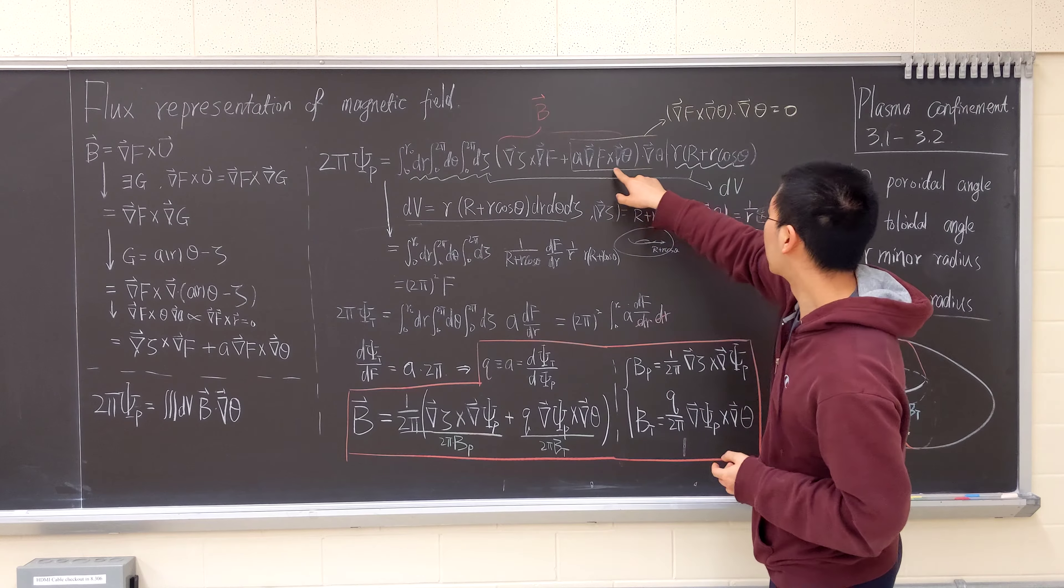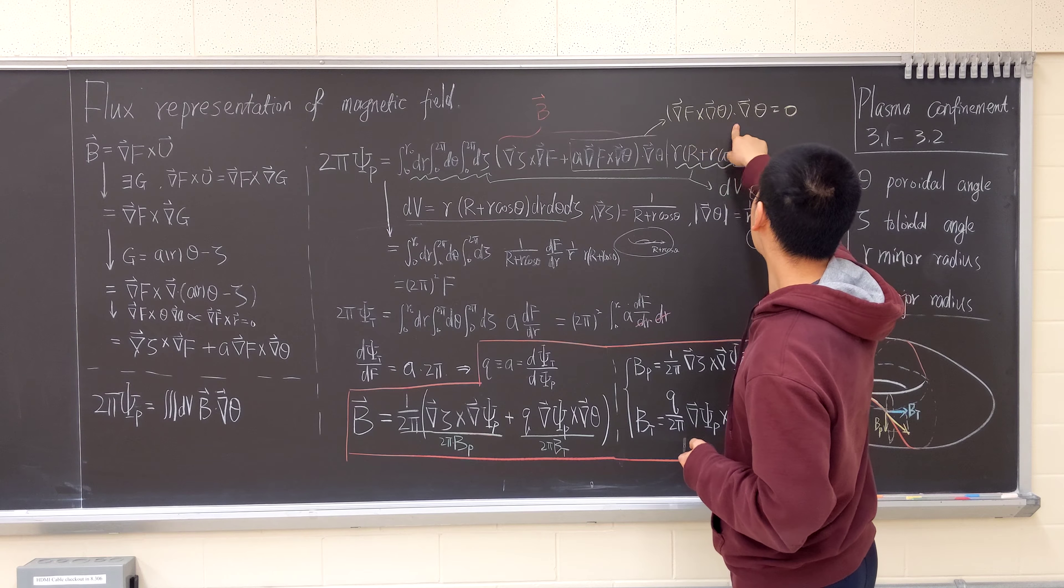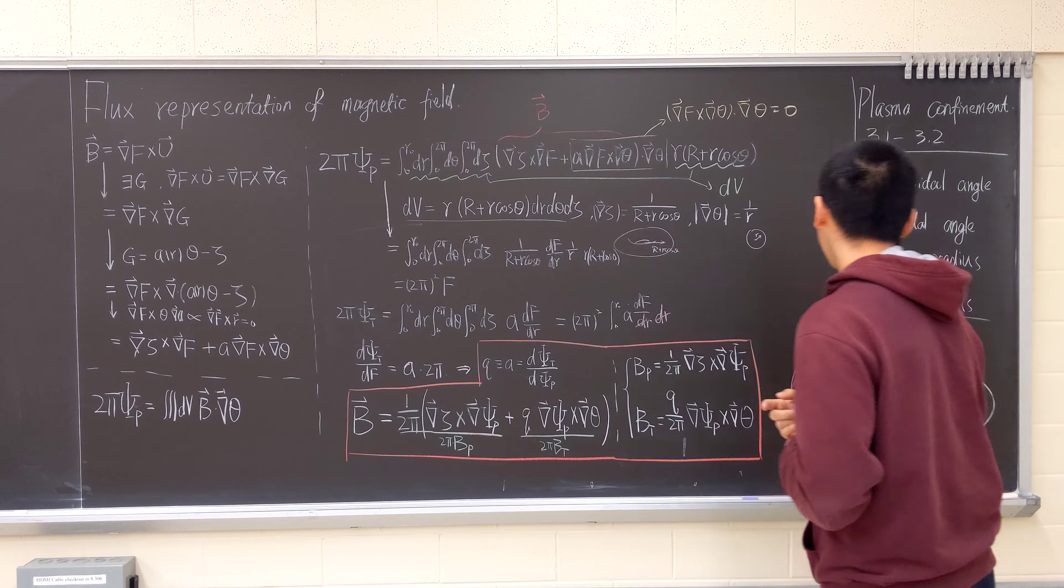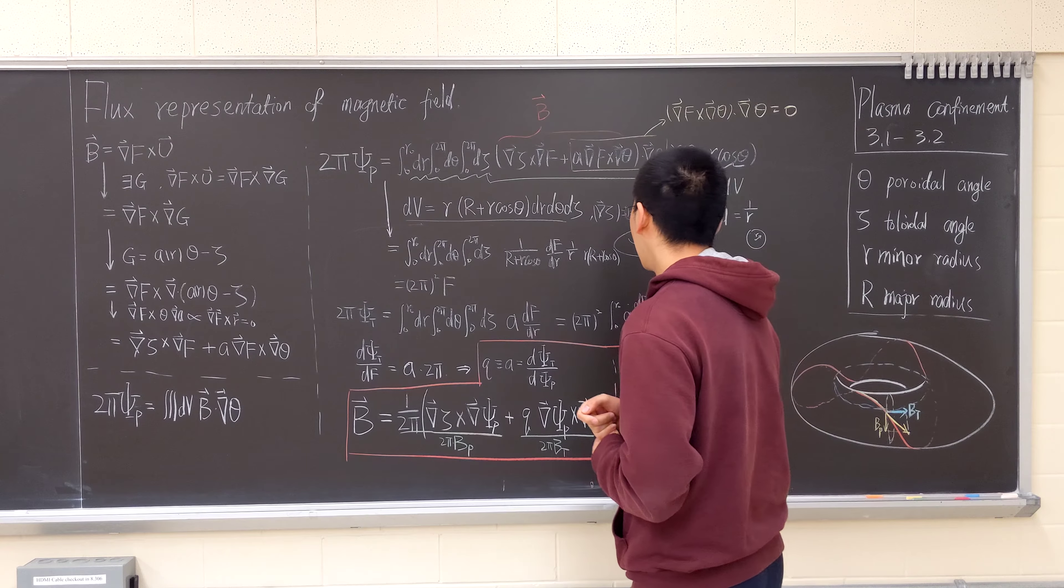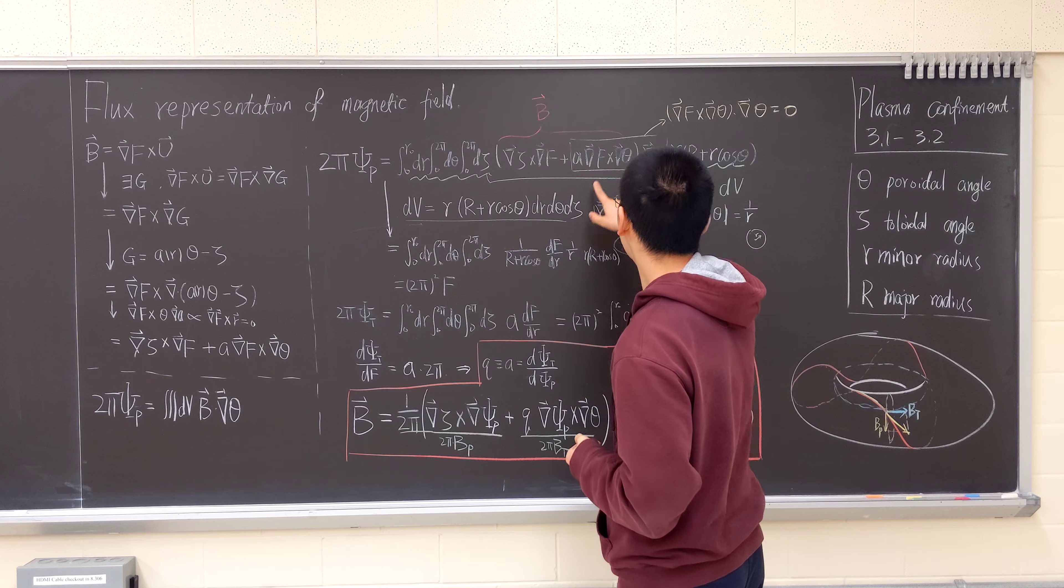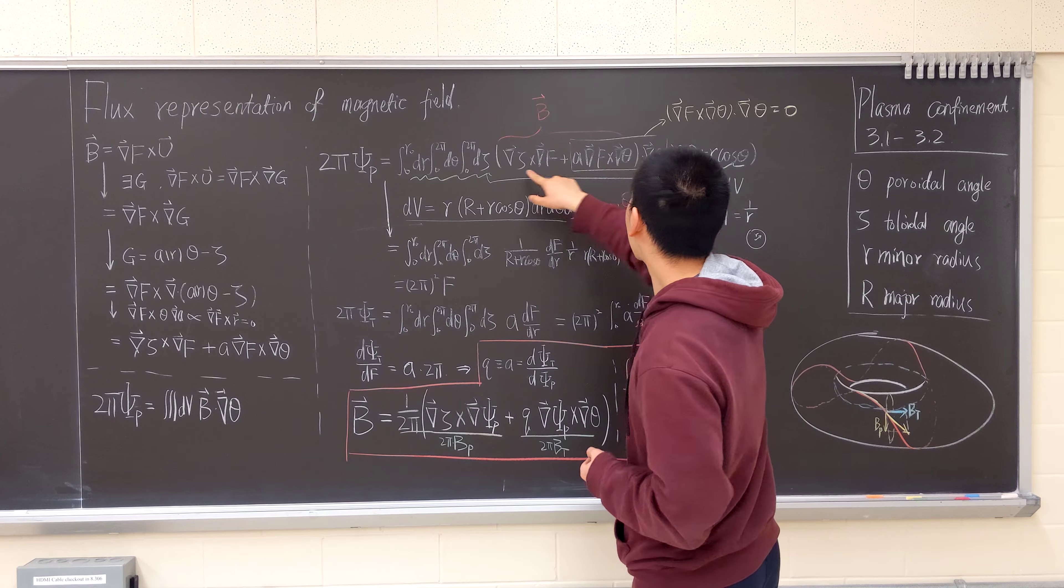We know this term will be zero because cross dot with the same vector will be zero. We're only left with this term and this term cross dot.